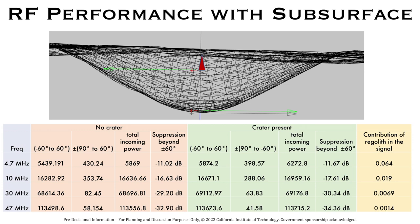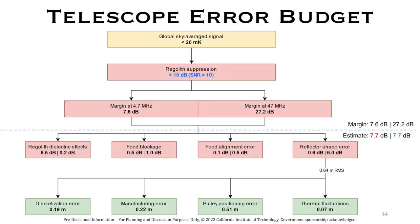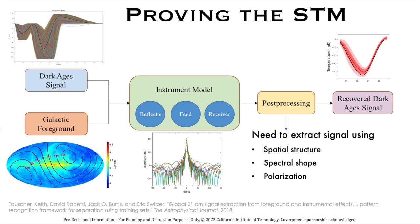Regolith's contribution falls to 0.1% for the highest frequency of 47 MHz. We created an error budget to account for all the inaccuracies in the technology which will be used to build an instrument model for LCRT. We worked with Professor Jack Burns's science modeling pipeline called PyLynx to prove that LCRT can indeed recover the Dark Ages science signal.